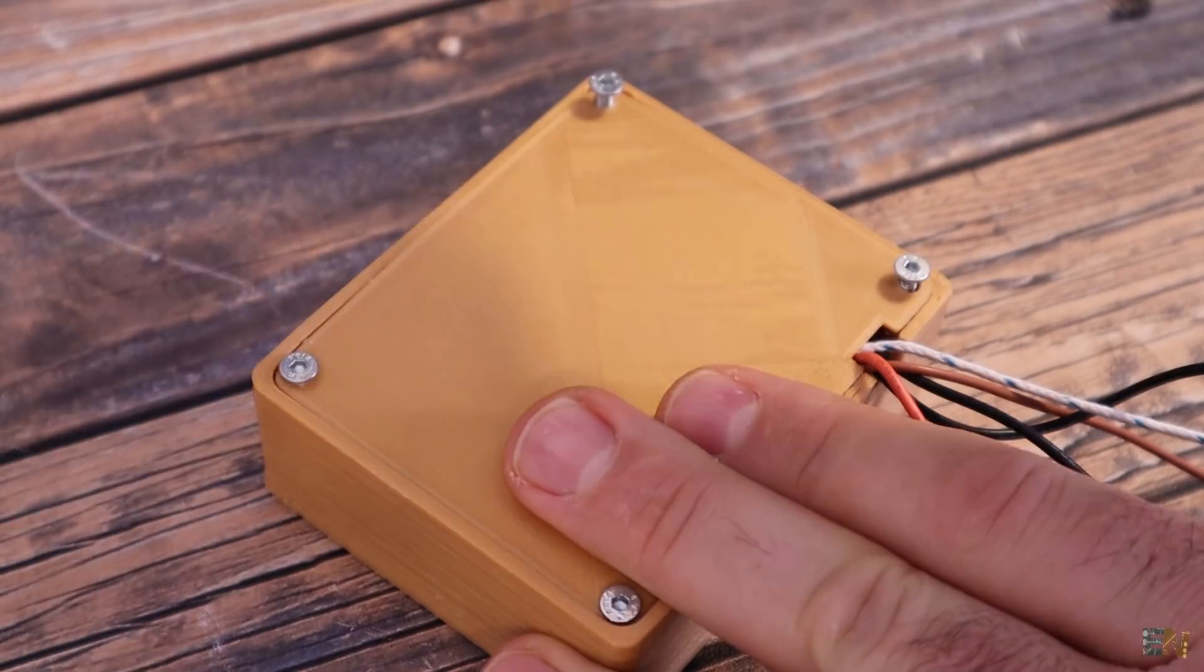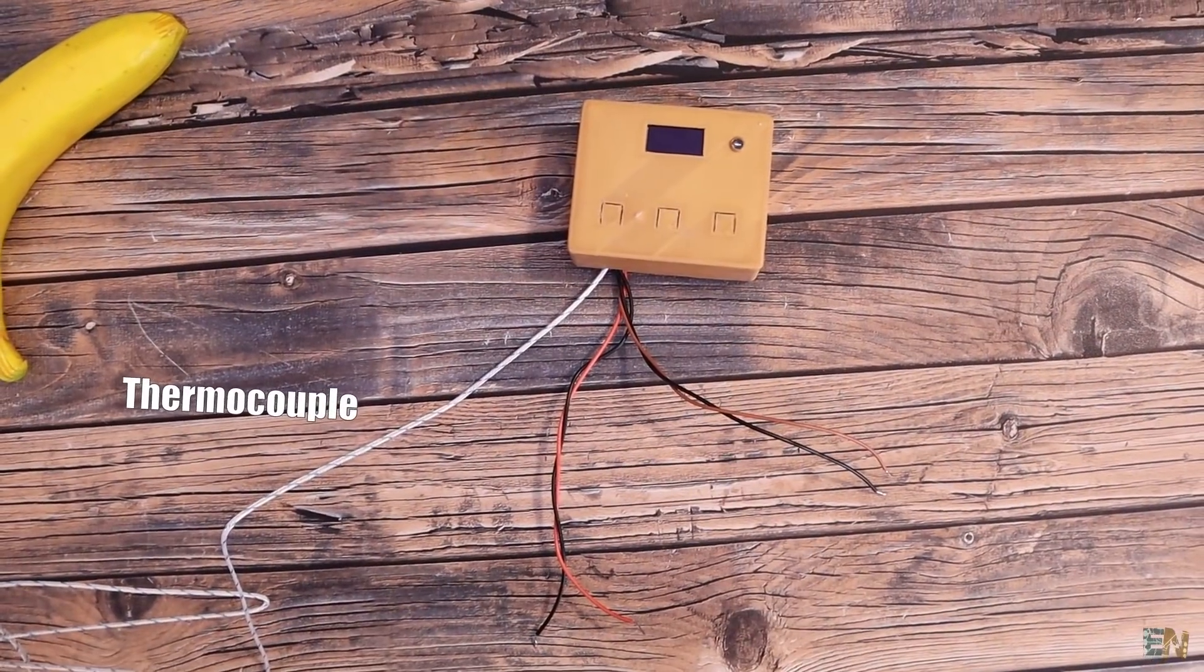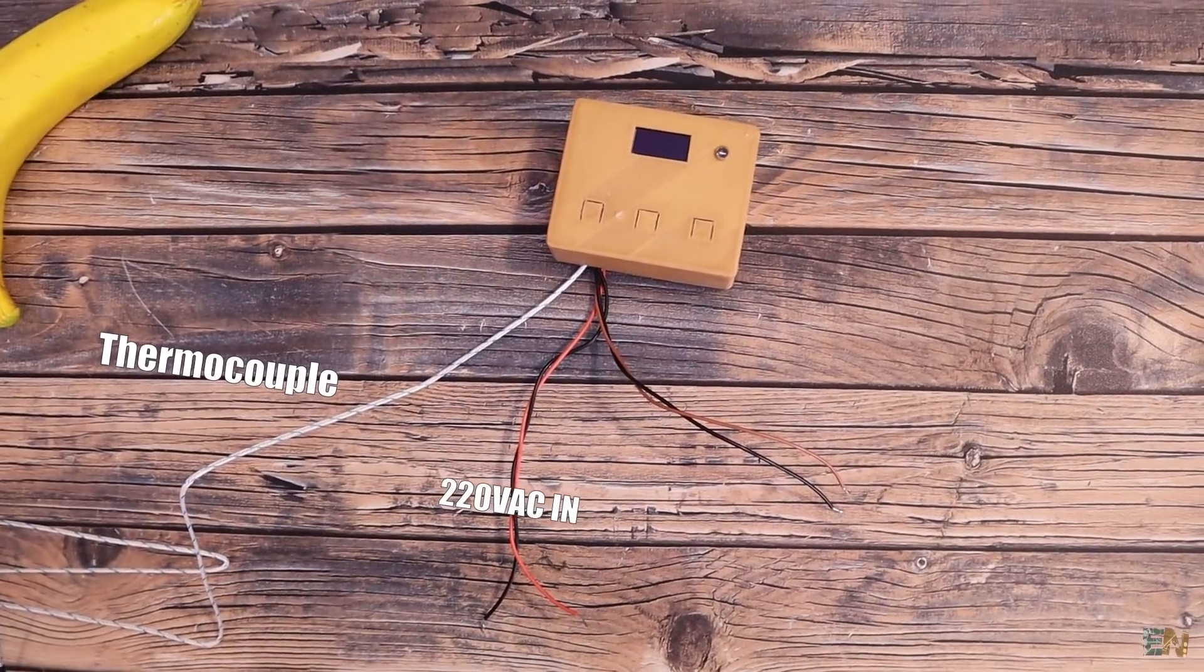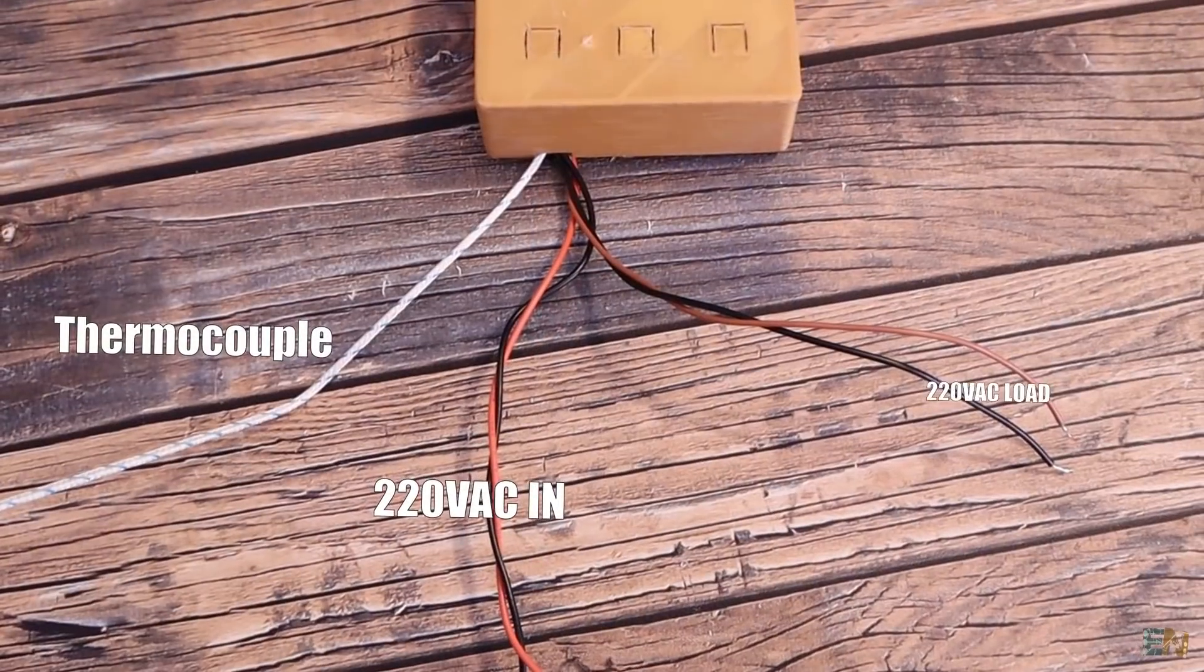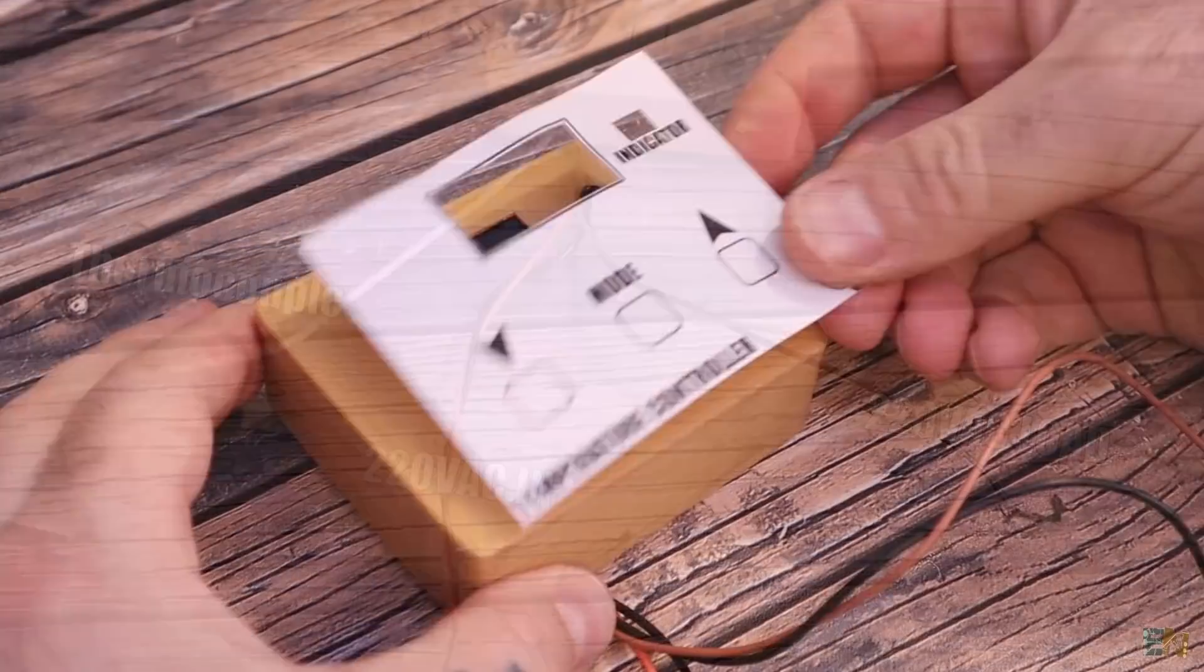We have a few wires that are coming out from the controller. One is for the thermocouple. Two more are for the 220V AC input and the other two are for the load connection, just as we have with any other commercial controller.